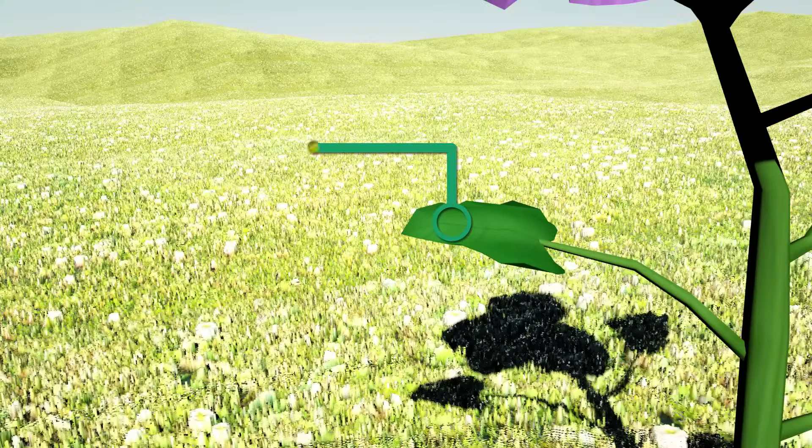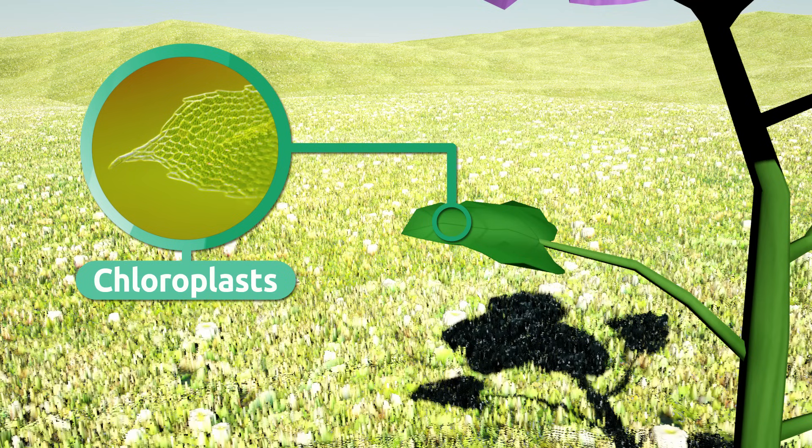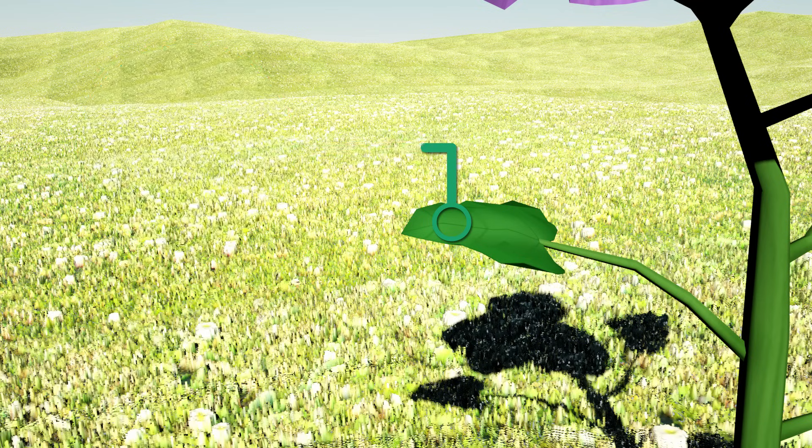Leaf cells are made up by chloroplasts, which contain a pigment called chlorophyll. Chlorophyll gives plants their green color. Chloroplasts capture light energy.